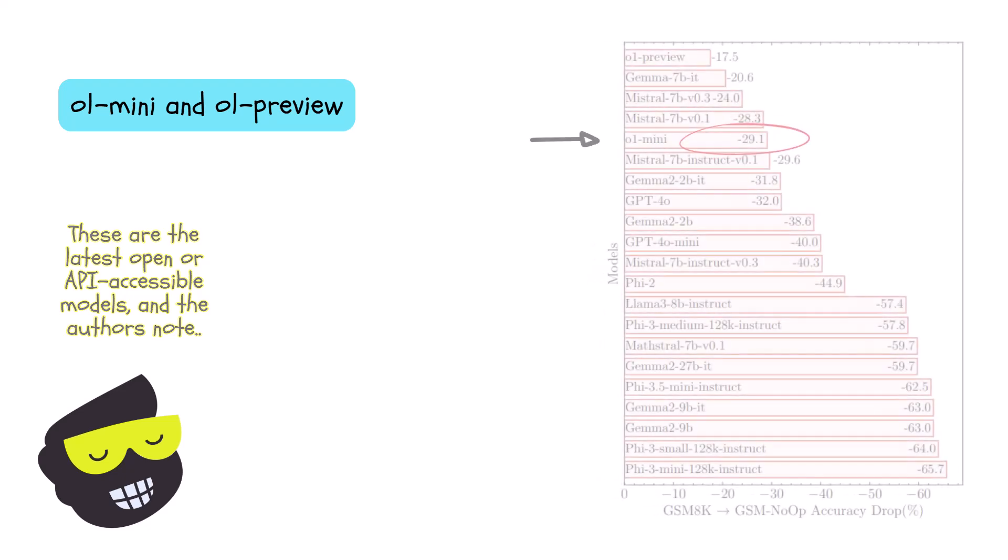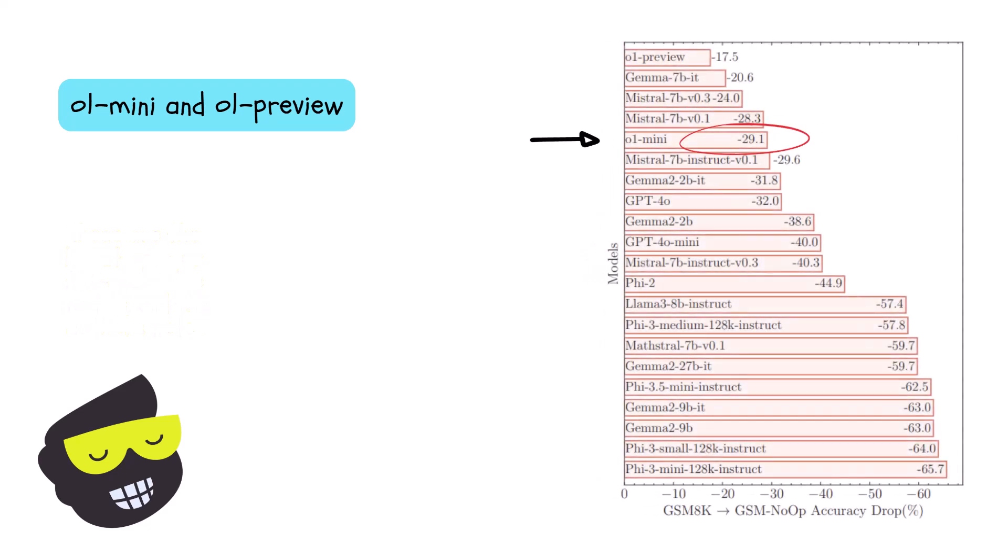And as well, the O1 Mini, O1 Preview, these are some of the newest models. The authors point out that O1 Mini tends to have a strong average accuracy, but still experiences noticeable drops when faced with no operational value statements. O1 Preview does better than most, however, it isn't immune as well.